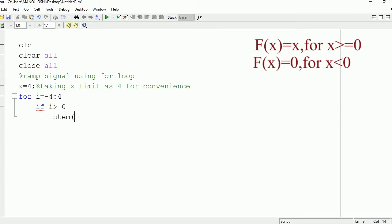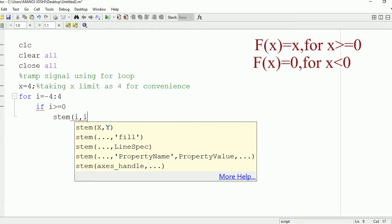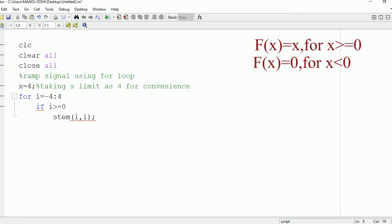Now we have the condition that if i is greater than or equal to 0, in that condition only the ramp signal exists. In any other condition the ramp signal is 0. So for this condition, if i is greater than or equal to 0, we will use stem command: stem(i, i). Then we need to hold this value so that we can plot all the samples together. If we will not make use of the hold command, then only one value will be displayed.